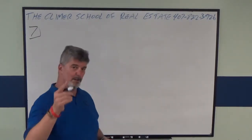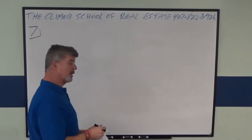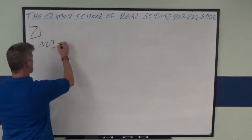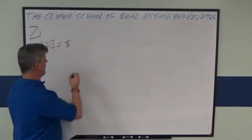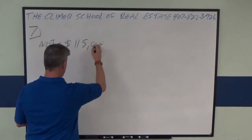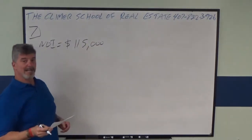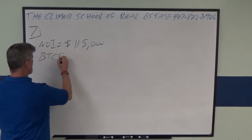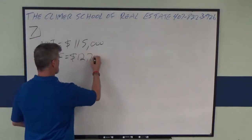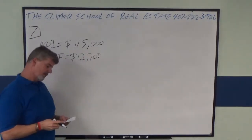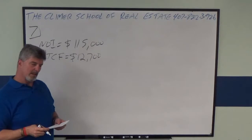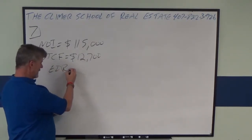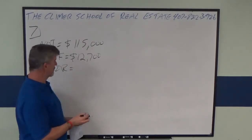Let me show you something. First of all, I'm going to write down the pertinent information. According to the problem, NOI is $115,000 and before-tax cash flow is $12,700. The question is how much of a down payment if the investor wants an equity dividend rate of nine percent.